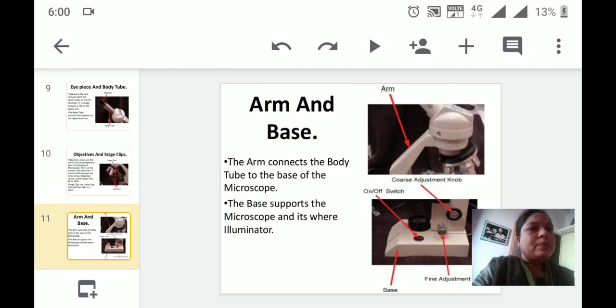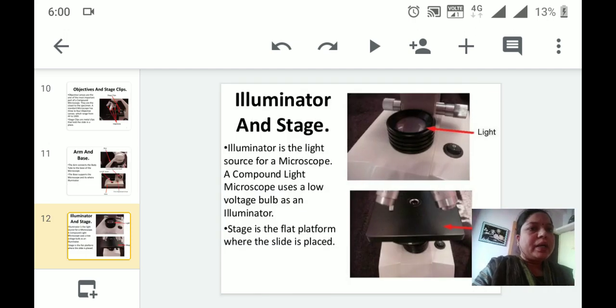The arm connects the body tube to the base of the microscope, whereas the base supports the microscope. It also has the illuminator in case of compound light microscope, and in case of our simple microscope, it holds the mirror. Illuminator is present in the compound light microscope, whereas in our common microscope it is a mirror. Illuminator is a light source of the microscope which is present at the base. A compound light microscope uses a low-voltage bulb as an illuminator. The stage is a flat platform where the slide is placed.